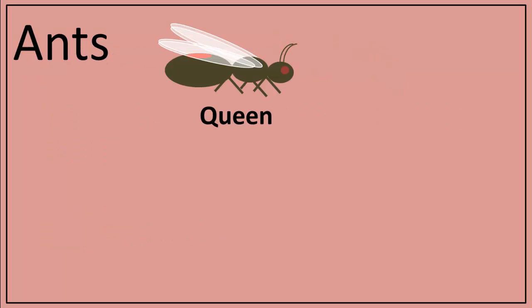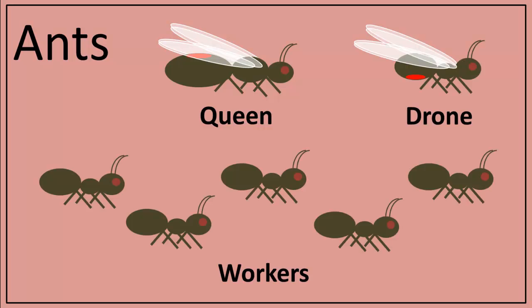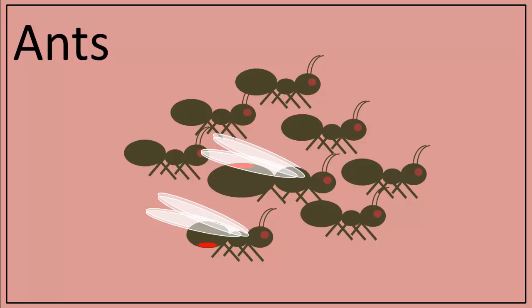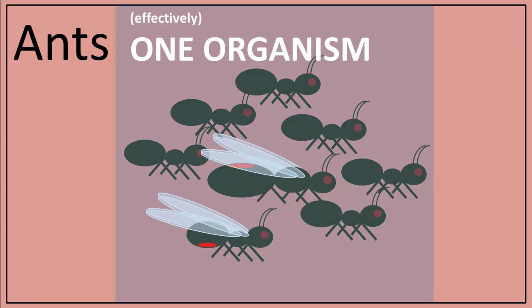Ant colonies have a similar dynamic. The colony exists to serve the queen, who mates with drones and is fed by workers. Although there may be various types of workers in a colony, the principle is essentially the same. An ant colony, including the queen, her workers, and her drones, can also be considered as a single organism. Again, the queen and drone serve as reproductive organs, while workers serve as vital organs.